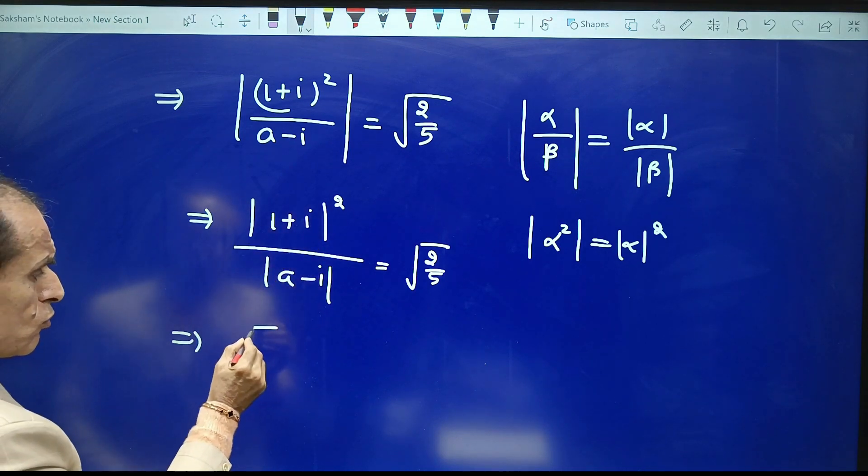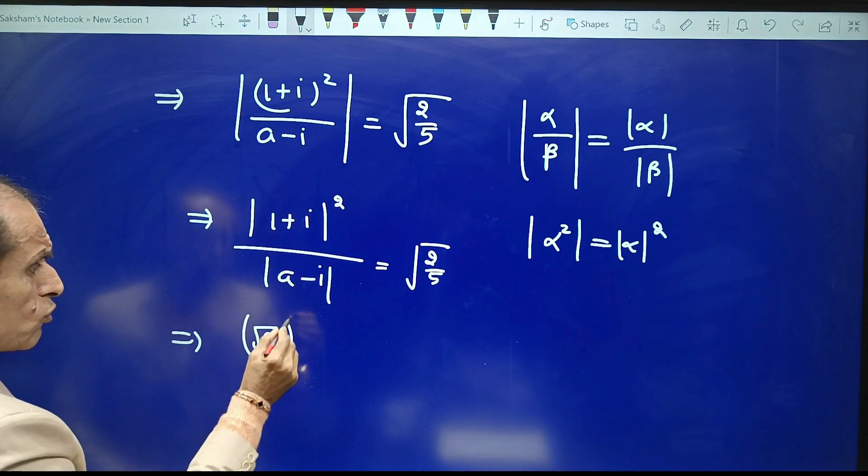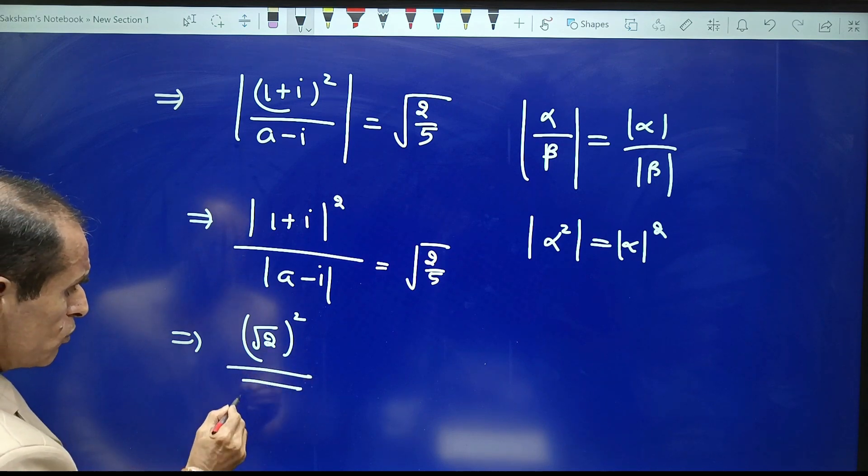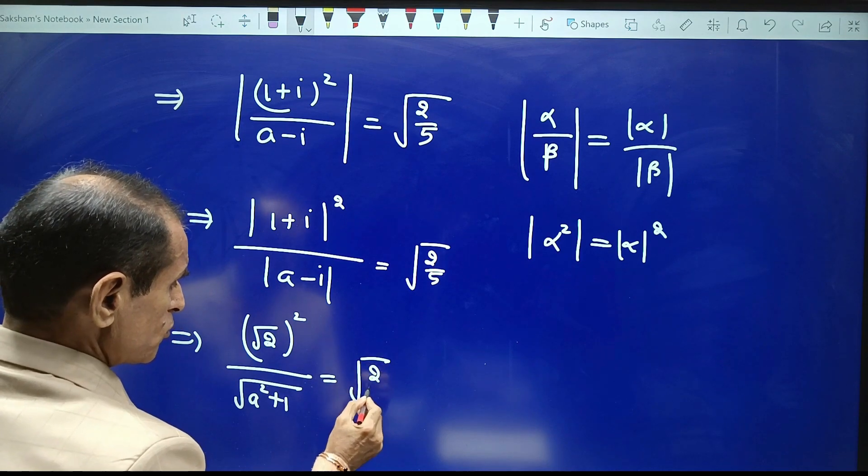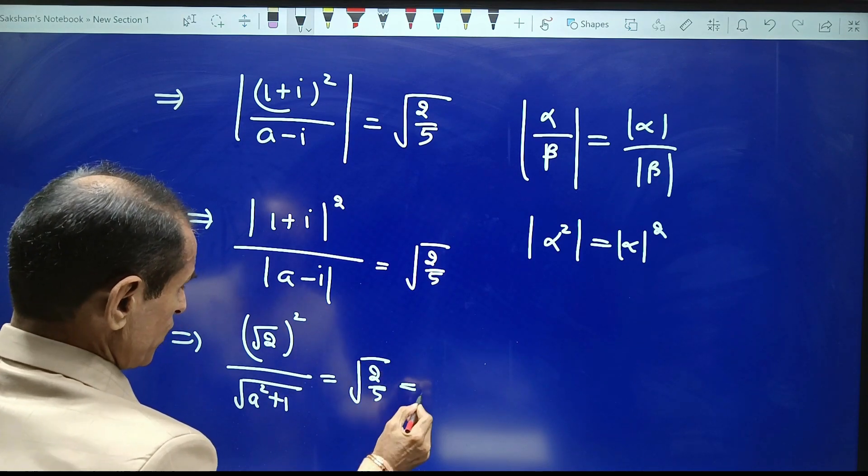And this is (√2)²/√(a²+1) = √(2/5), which simplifies to 2/√(a²+1) = √(2/5).